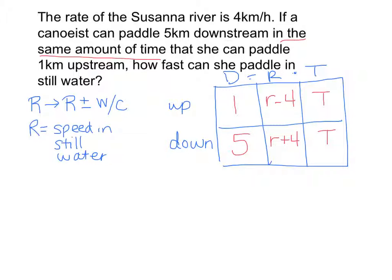So it becomes a little bit more challenging here. Right now I have equation 1 equals R minus 4 times T, and then 5 equals R plus 4 times T. But you have two choices — you could distribute the T.